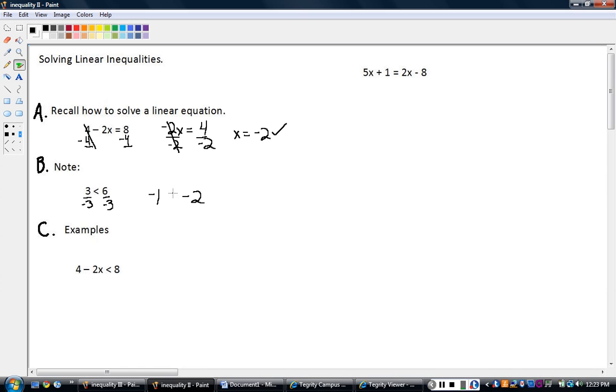I'm going to leave the sign how it is and ask yourself, is that true? Is negative 1 less than negative 2? That's not true, right? Negative 1 is actually greater than negative 2. So what happened is when we divide this by negative 3, we've got to flip this sign around.